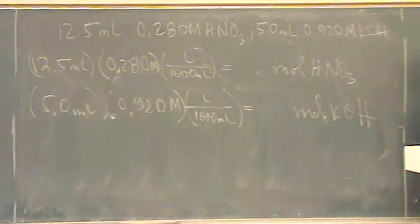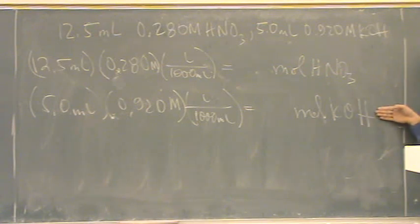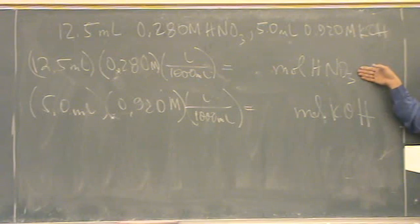The bigger one tells you what it is. If these two numbers are equal, it's neutral. If this one is bigger, since it's a base, it's basic. If this one's bigger, since it's an acid, it's acidic. And that's it. That's the concept.